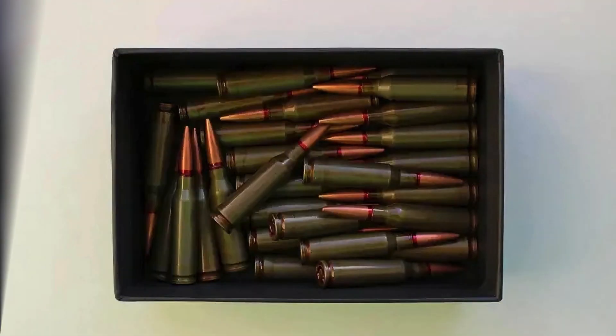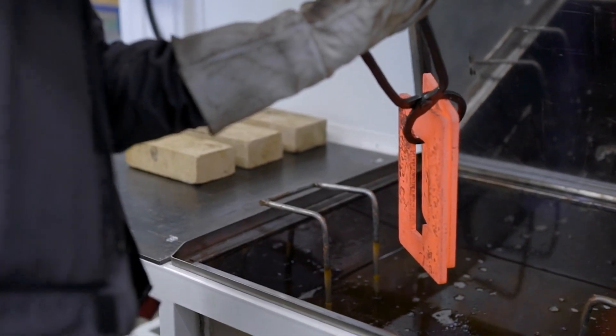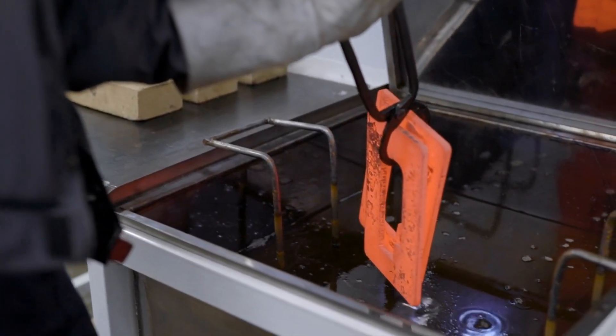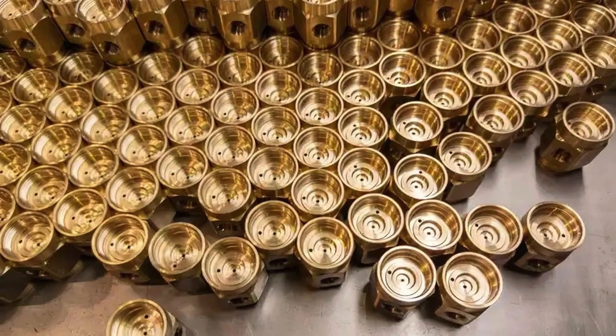The primer, essentially the spark plug, consists of a soft metal cup and a sensitive material called lead stifonate. When struck, it ignites, sending a flame through the case to ignite the propellant.